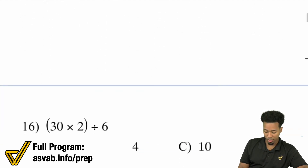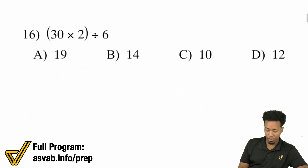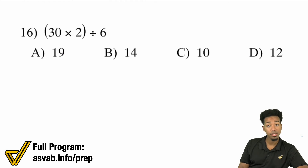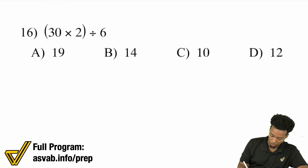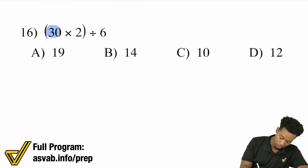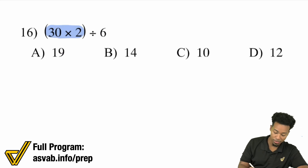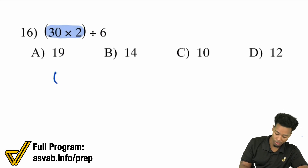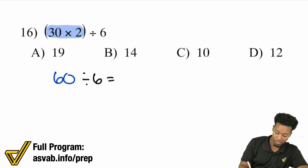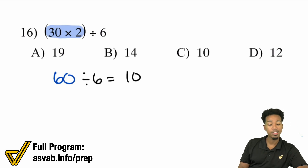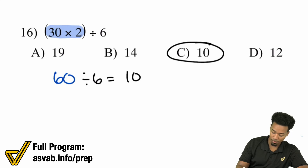Number 16: We have (30 times 2) all divided by 6. What we're going to do first is take care of that parentheses with the multiplication inside. 30 times 2 will be 60. Then 60 divided by 6 is going to end up being 10. Nice and easy. C.